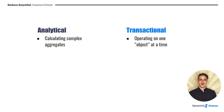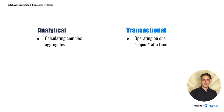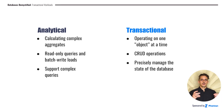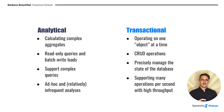To summarize: in the analytical world, we're talking about calculating complex aggregates, whereas in the transactional world, we're really only operating on one object at a time. In the analytical world, we're mostly doing read-only queries with occasional batch-write jobs, while in the transactional world, the whole game is about doing CRUD operations—create, read, update, delete—very efficiently. In the analytical world, we need to support really complex queries, whereas in the transactional world, we want to manage the state of the database very precisely, with sophisticated guarantees about exactly what has or hasn't been saved. Finally, in the analytical world we support ad hoc and relatively infrequent analyses, whereas in the transactional world we need to support many operations per second with very high throughput.